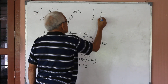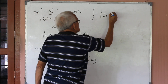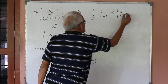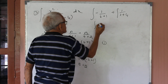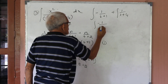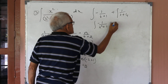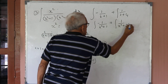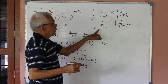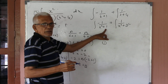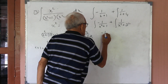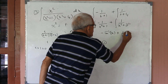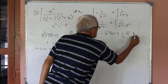Substituting: minus 1 by (t+1) plus 2 by (t+4). Replacing t with x squared: minus 1 by (x²+1) plus 2 by (x²+4). Integrating: 1 by (x²+1) gives tan inverse x, so the result is minus tan inverse x plus 1 by 2 tan inverse (x by 2).